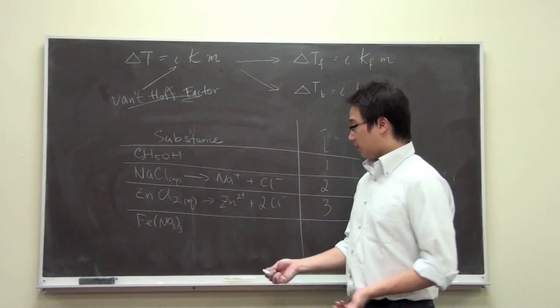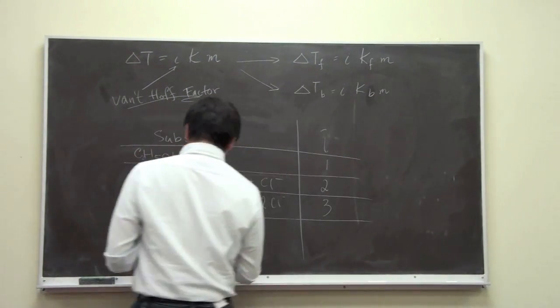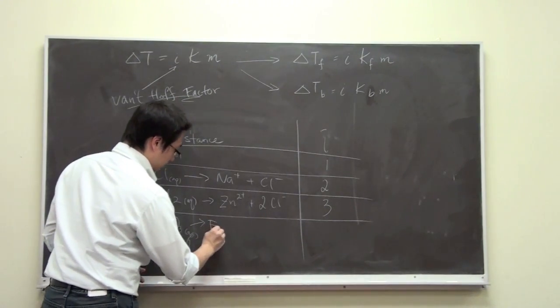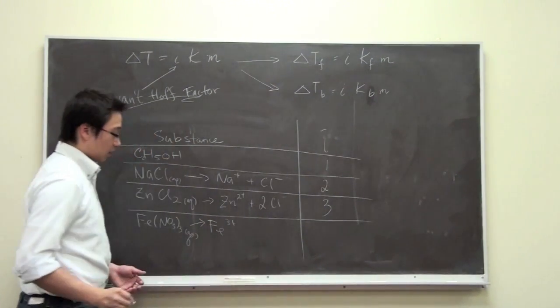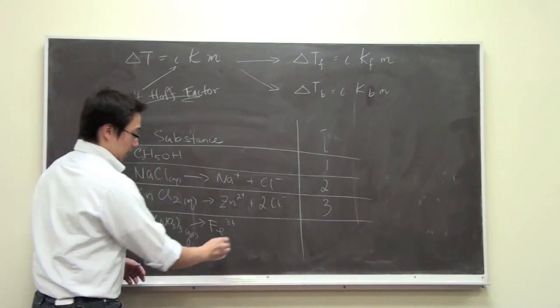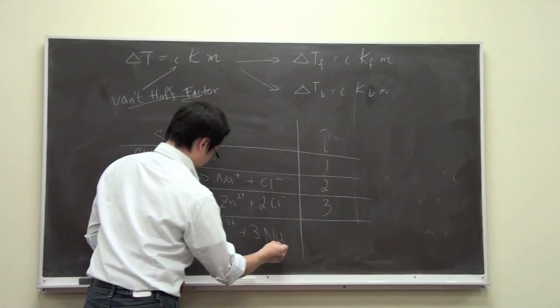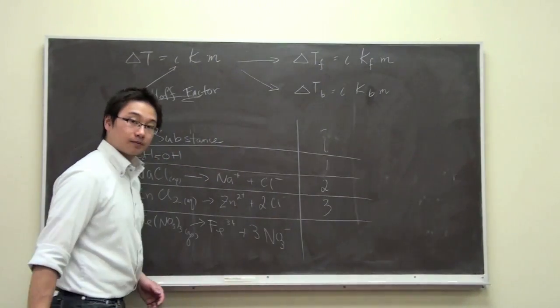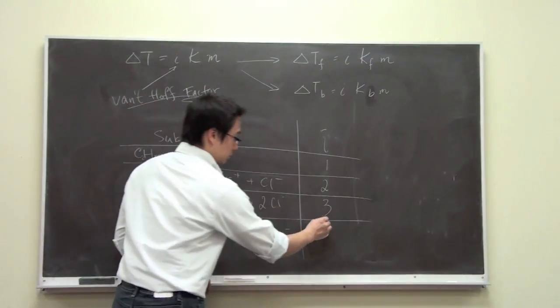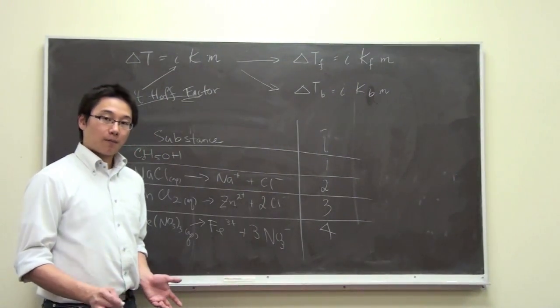Our last example is iron(III) nitrate. When it is dissolved in water, we would have one Fe3+ and three of the nitrate ions. And we have one, two, three, four total. So in this case, the Van't Hoff factor would be four.